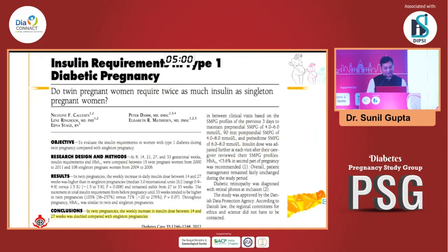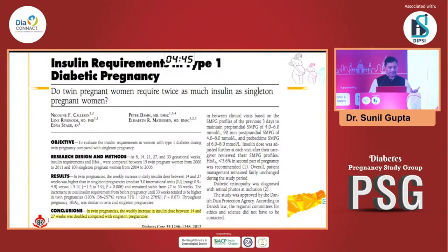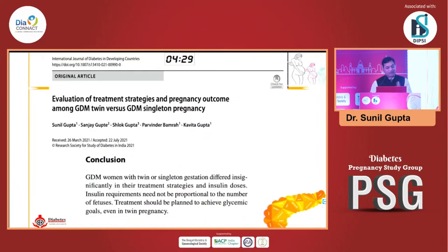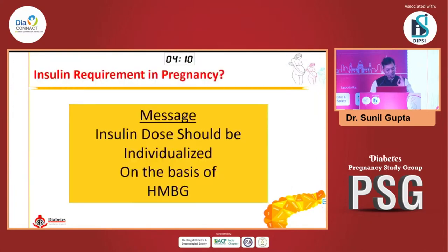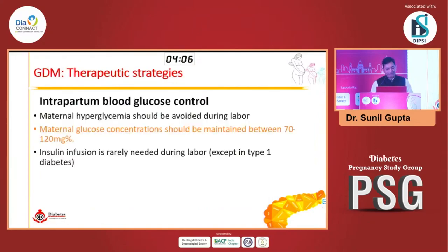A paper stimulated me and colleagues including Tandut Mahesh to ask whether in twin pregnancy the insulin doses are higher. When we discussed among colleagues, no one had noticed this from their data. We then did a collaborative study with Sanjay Gupta around 2040 pregnancies and found that GDM women with twins or singletons differed significantly in treatment strategies and insulin doses, and so the dose requirement cannot simply be extrapolated. Treatment should be individualized through glycemic monitoring; insulin dose has to be titrated on the basis of home monitoring of blood glucose.